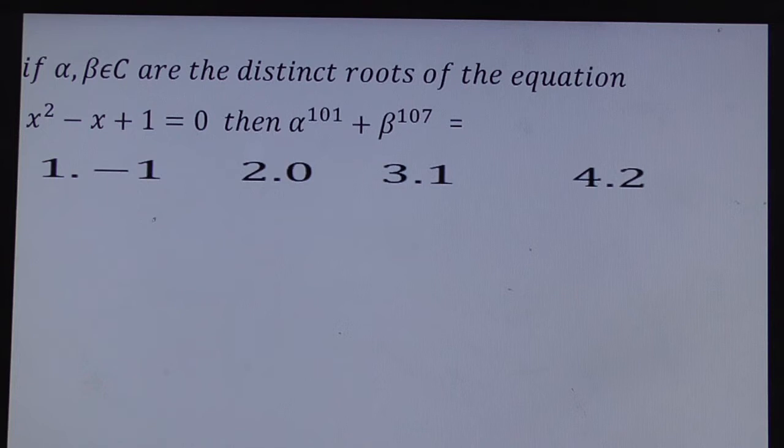If α, β are distinct roots of the equation x² - x + 1 = 0, then α^101 + β^107 equals what?